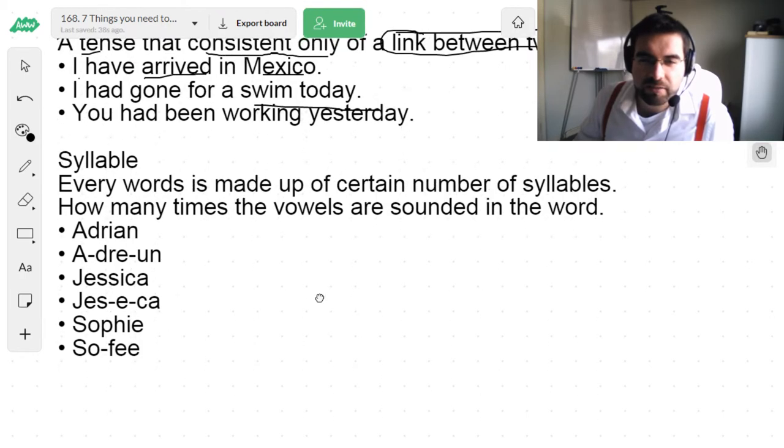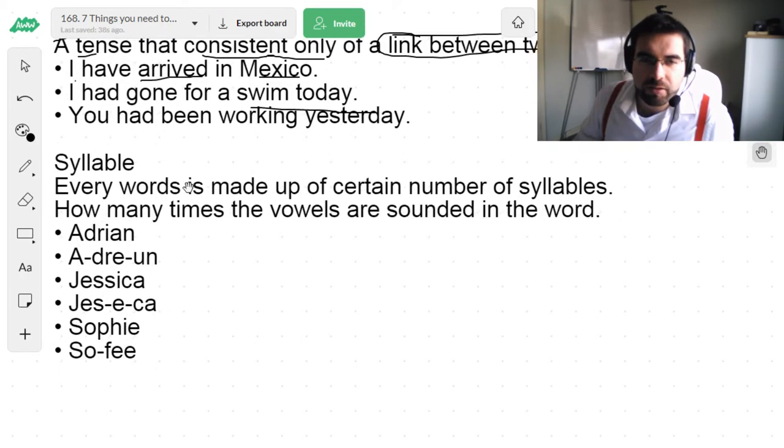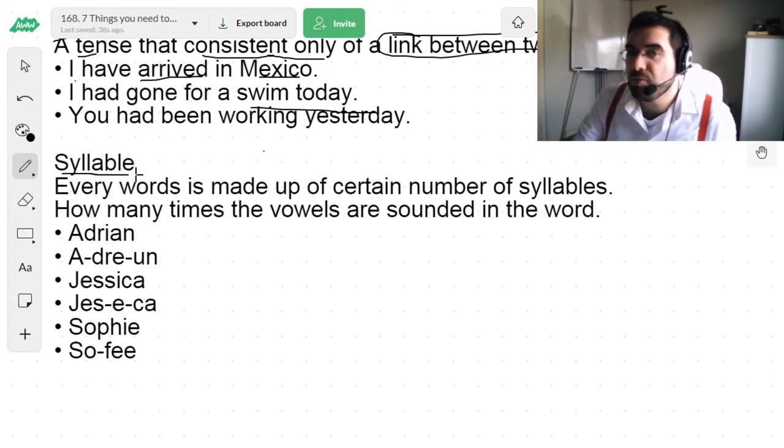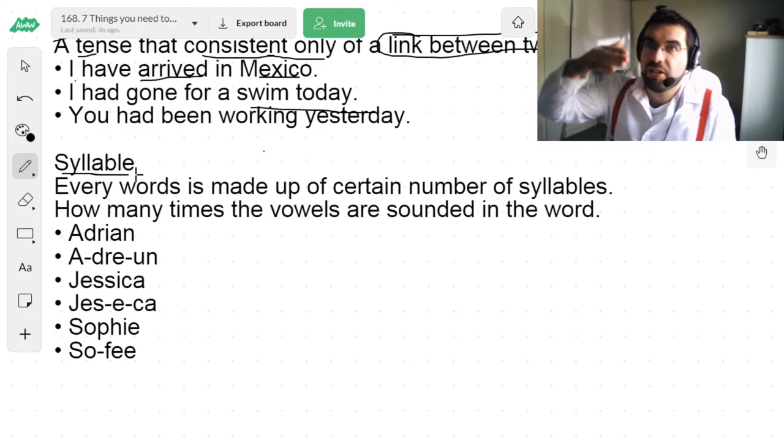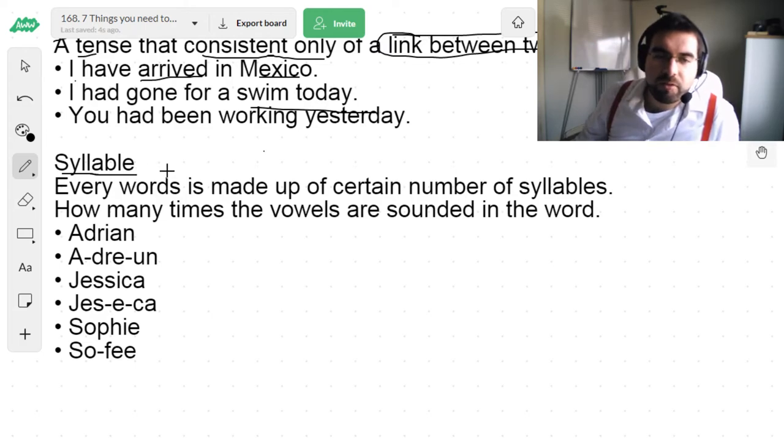Now, this one is very interesting. Syllable. Because syllables affect how superlatives are made. Big, bigger, biggest, small, smaller, smallest. Every word is made up of a certain number of syllables. How many times the vowels are sounded in the word?